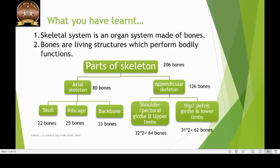Now let us review what we have learnt in this video. The skeletal system is an organ system made up of bones. Bones are living structures which perform bodily functions. The human skeleton is made up of 206 bones and it may be divided into the axial skeleton and the appendicular skeleton. The axial skeleton consists of 32 skull bones, 25 ribcage bones and 33 vertebrae which make the backbone. The appendicular skeleton consists of 64 bones which make the upper limbs and the shoulder girdle, and 62 bones which make the lower limbs and the hip or pelvic girdle.